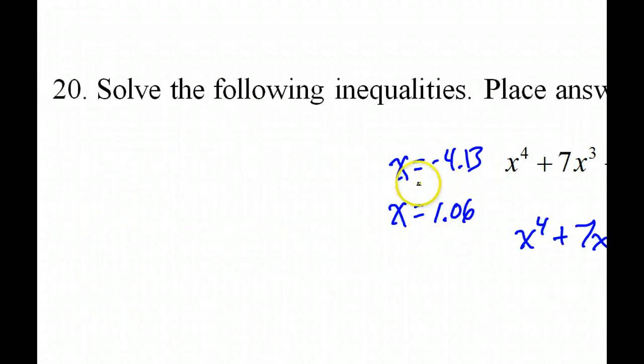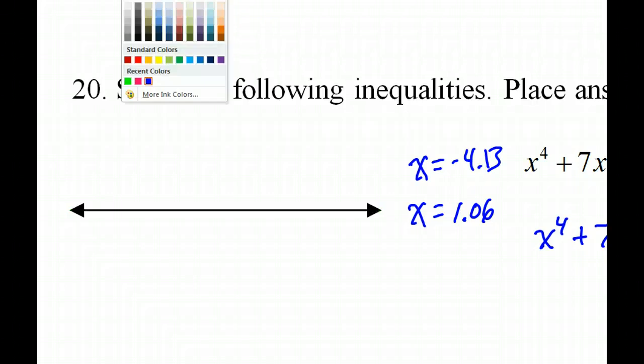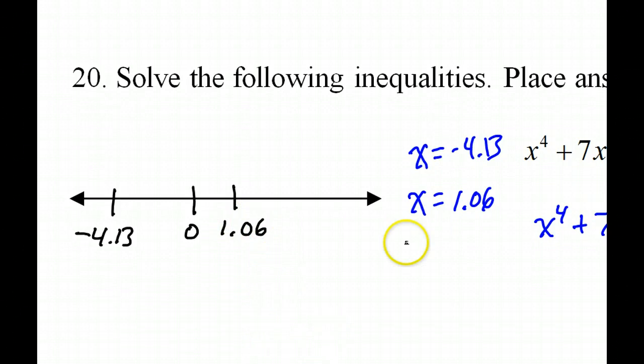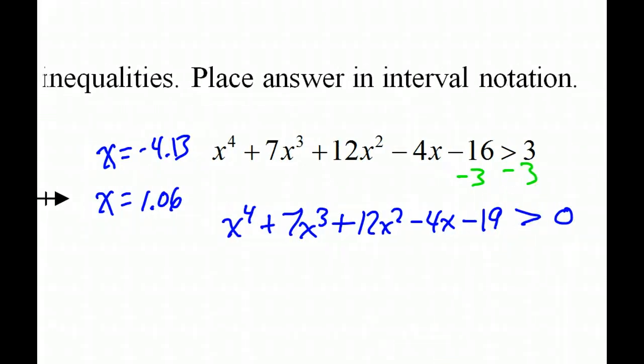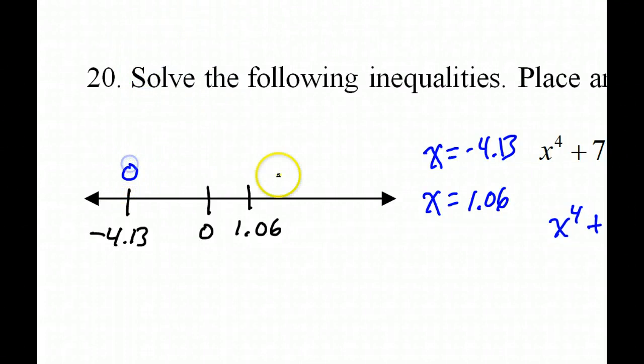Okay, so these are my two zeros. So let's go ahead and do the graph. I'm going to do this one by the testing value method. Okay, test points. So as I do this graph, I have a zero at negative 4.13. Okay, and then I guess we'll have zero in here somewhere. And then I have a zero at 1.06. Okay, so those are the only two zeros I have. This is greater than, so I'm going to leave these as open circles. Okay, so open circle, open circle.